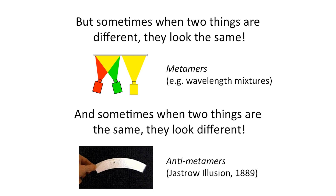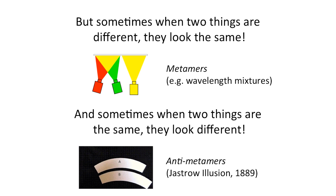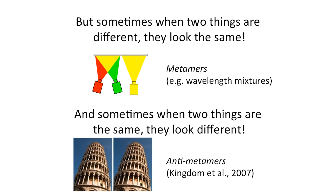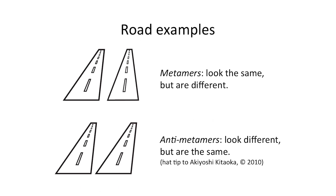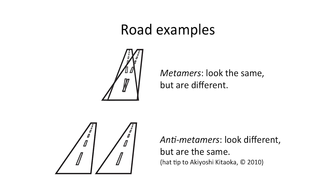And sometimes when two things are the same, they actually look different. We've started calling these things anti-metamers, but they've actually been around for a long time. One of the first is the Jastre illusion, which came about in the 1800s — these two shapes are actually identical to one another, but they look very different. An anti-metamer won the Best Illusion of the Year contest in 2007: the Leaning Tower illusion, where two identical pictures look like the one on the right is leaning over more. What you saw with the roads were examples of metamers and anti-metamers. Two of the roads were metamers — they looked the same but were very different. And two of the roads were anti-metamers — they looked different but were very much the same.